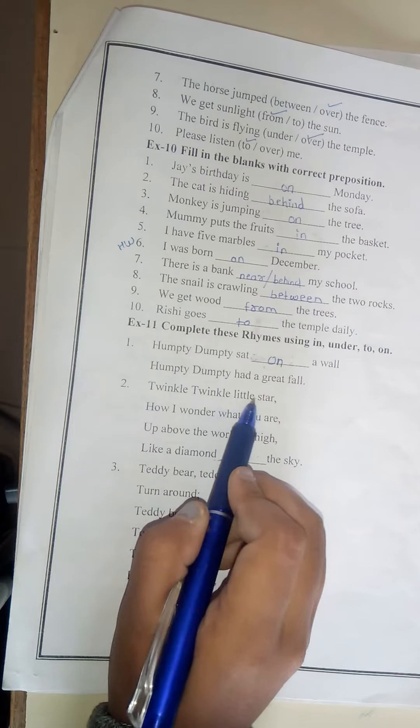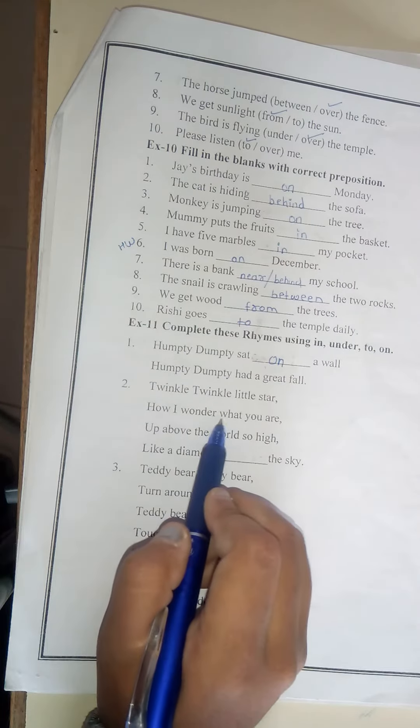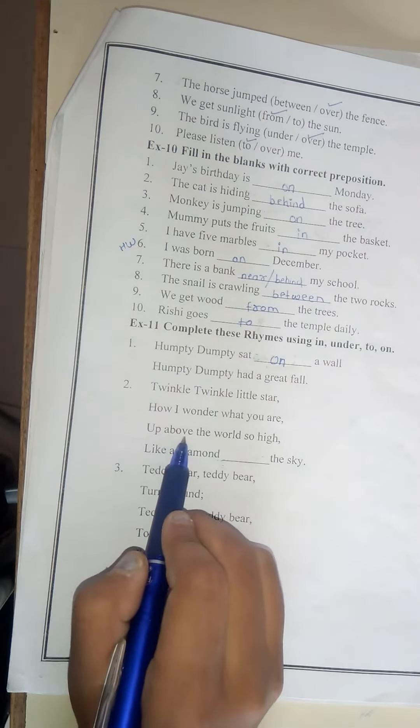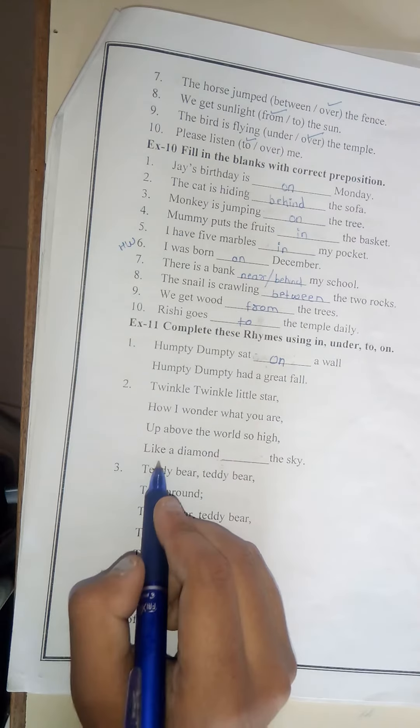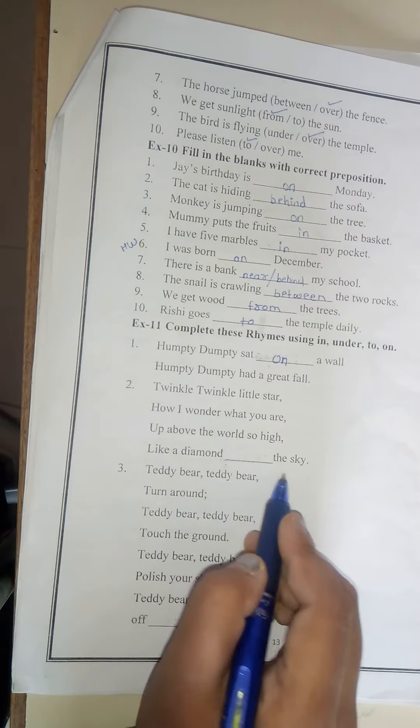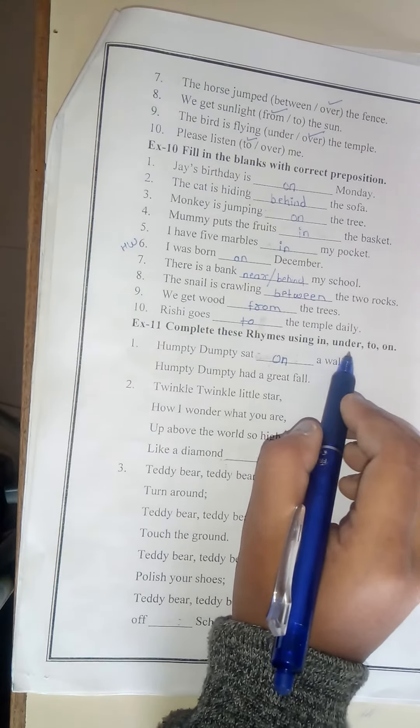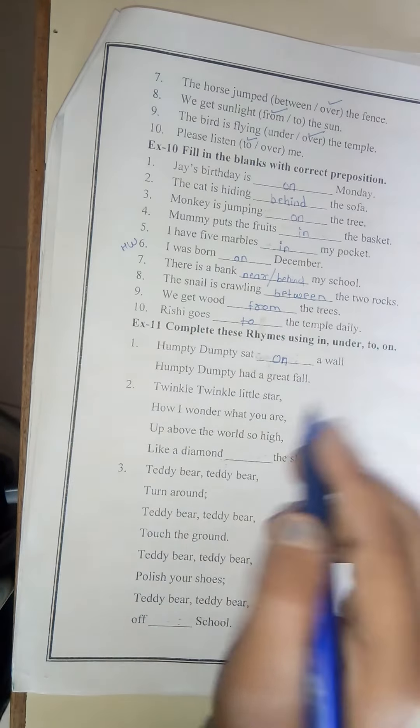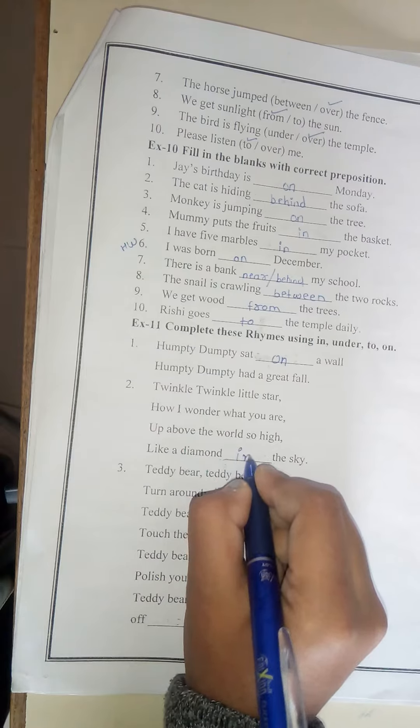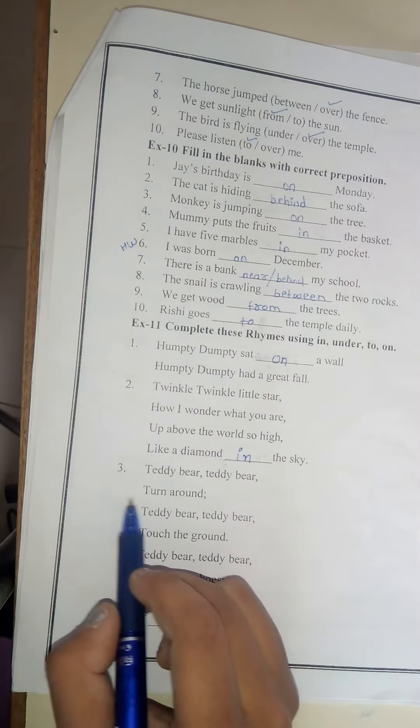Twinkle twinkle little star. How I wonder what you are. Up above the world so high. Like a diamond blank the sky. In this which we will use in, under, to, or on. In the sky. Number three.